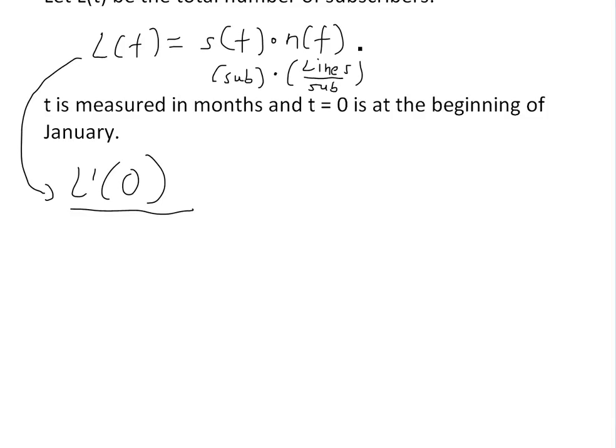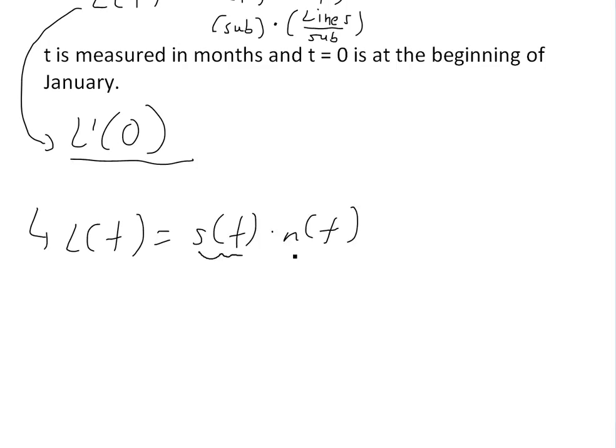To solve this, we can just use the product rule. So L(t) = S(t) times N(t). Now remember, this is two functions in one. So we need to find the derivative. So in this case, it's going to be L'(t) equals derivative of this, so S'(t), times N(t).